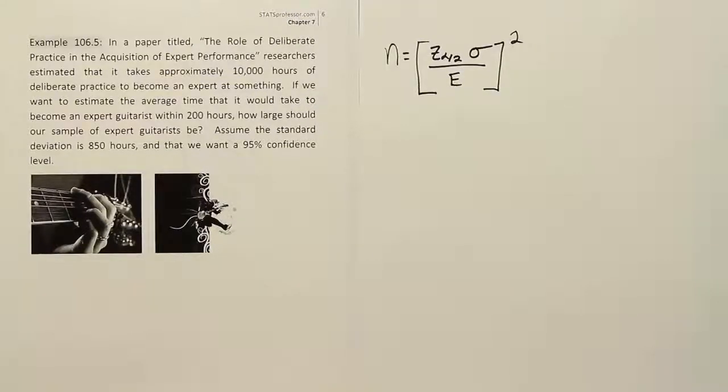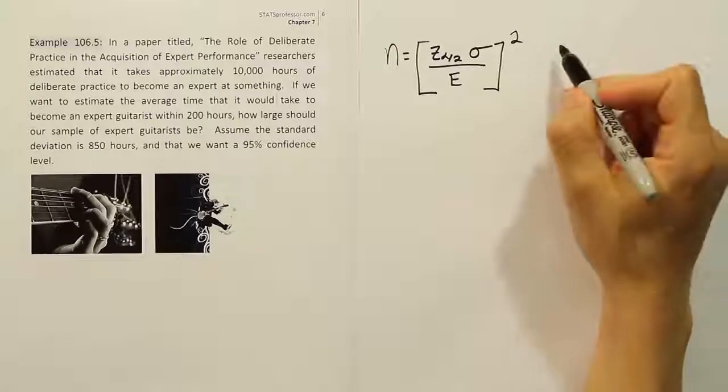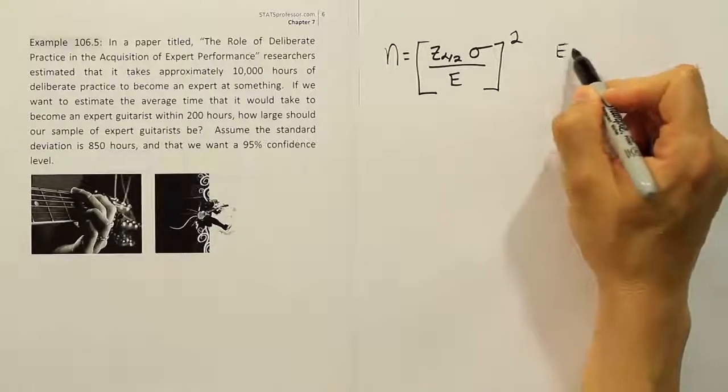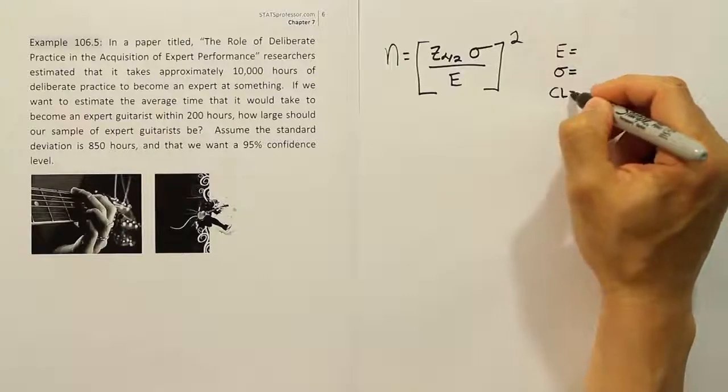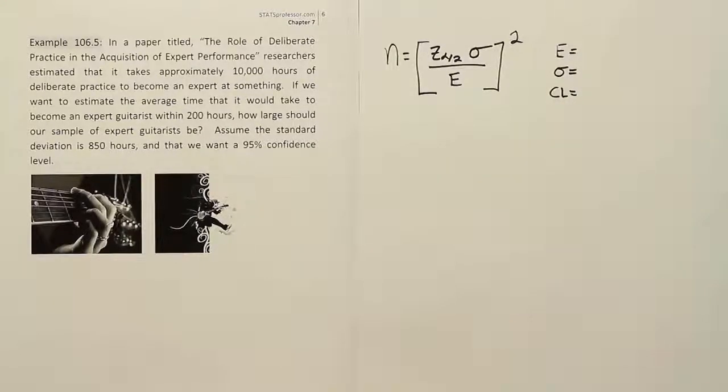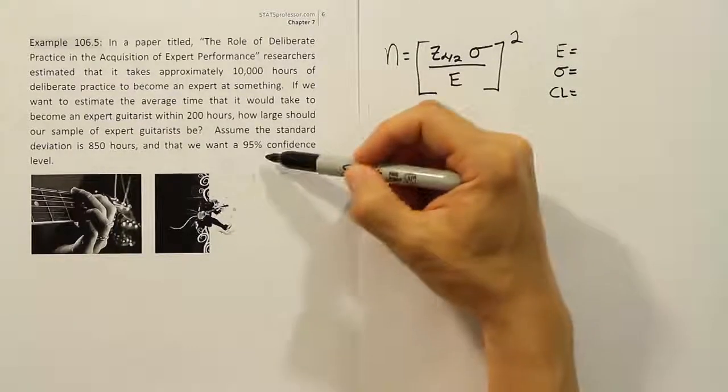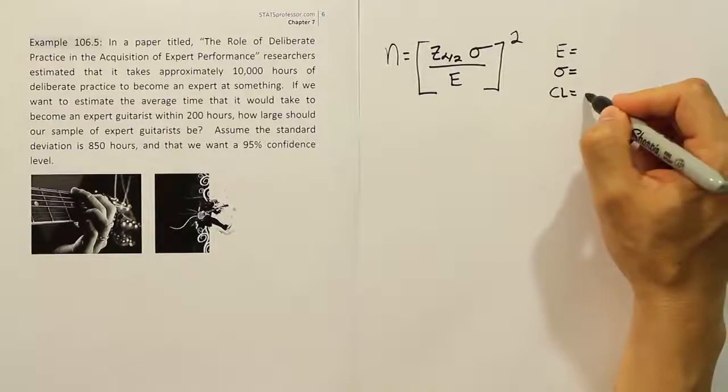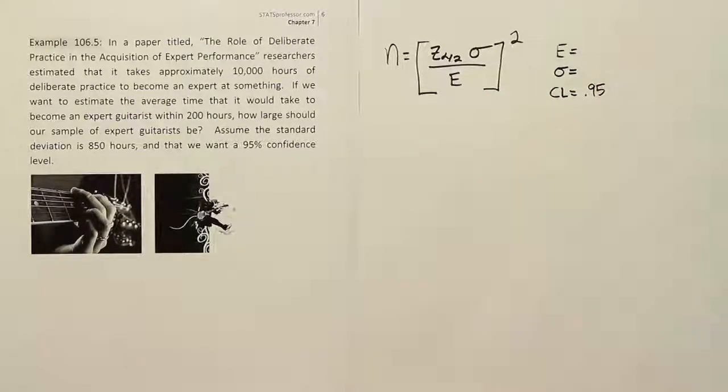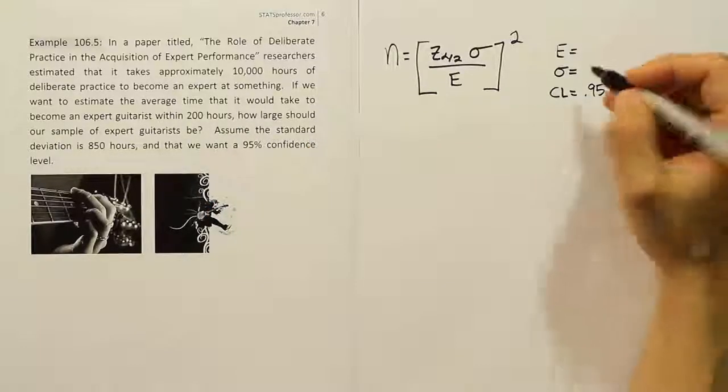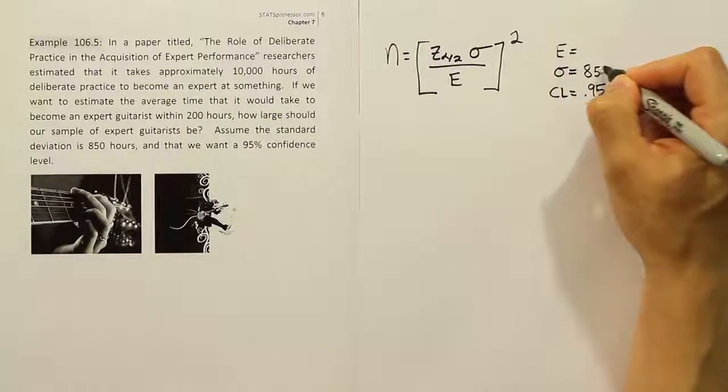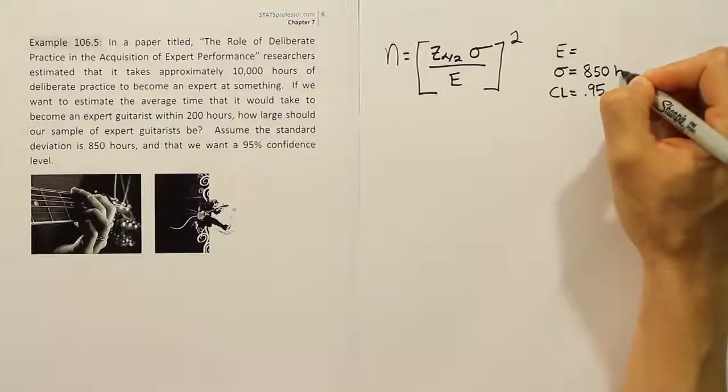Let's copy down the numbers given to us. In these problems, we always need a margin of error, a standard deviation, and a confidence level. I see the confidence level right away: 95% confidence. I'll write that down. I see the standard deviation is 850 hours. That's nice and explicit. 850 hours.